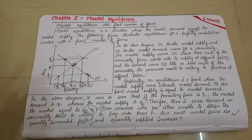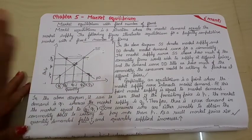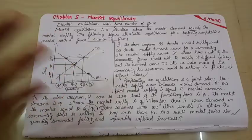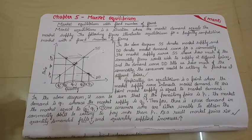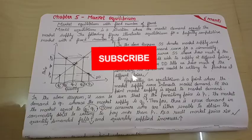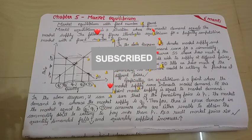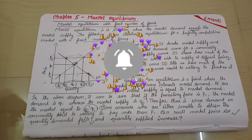So that is all for market equilibrium with fixed number of firms. I hope the concept is understood and detailed notes are provided. This should be enough to get 6 marks with the proper diagram. Thank you so much for watching. See you in the next video. Till then take care. Bye, Namaste.